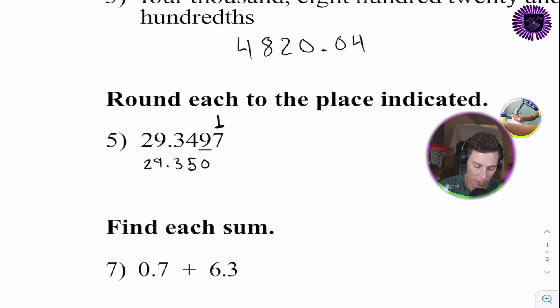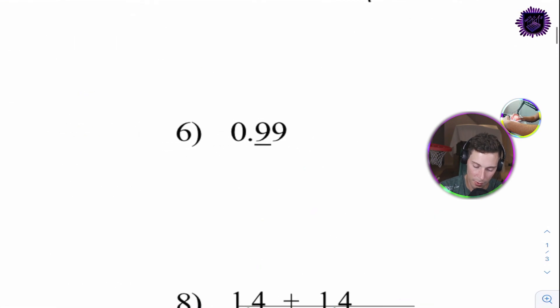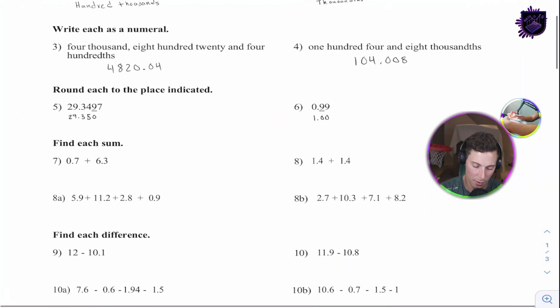The seven would round up, making the nine into a ten, which would make the next number into a fifty. So, it'd be rounding up. Tricky one. We're going to round this one up, as well, to one point zero, zero. Or, it could just be one. You could just round it up to one.